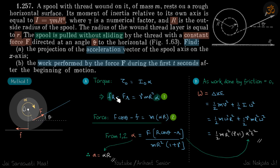We have two equations and two variables. Solving for alpha first — since we need the acceleration — we get the expression for alpha, and since a equals alpha·R, this gives us the value of acceleration.